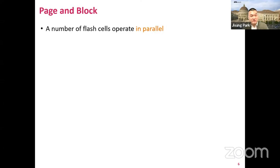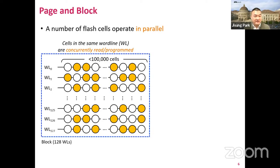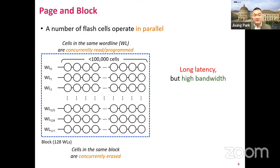Now let me recap the NAND flash memory organization. A core operating principle of NAND flash memory is that a large number of flash cells operate in parallel. A single word line controls more than 100,000 flash cells, meaning such a large number of cells in the same word line are read and programmed at the same time. More than hundreds of word lines comprise a NAND flash block, and all the cells in the same block are concurrently erased. This design increases operational latency but also enables significantly higher operation bandwidth.